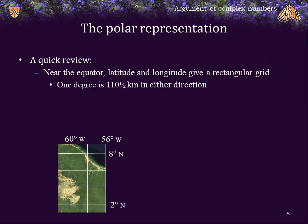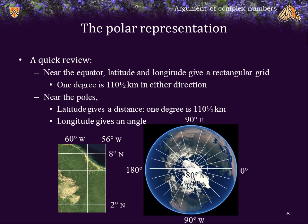A quick review, because we're going to use two terms: rectangular representation and polar representation. Near the equator, latitude and longitude give a rectangular grid, where one degree in either direction is approximately 110.5 kilometers. On the other hand, if you're looking down at the North Pole, latitude still gives a distance, where one degree is approximately 110.5 kilometers. However, longitude now strictly defines an angle relative to the prime meridian, which is running through Greenwich, England.